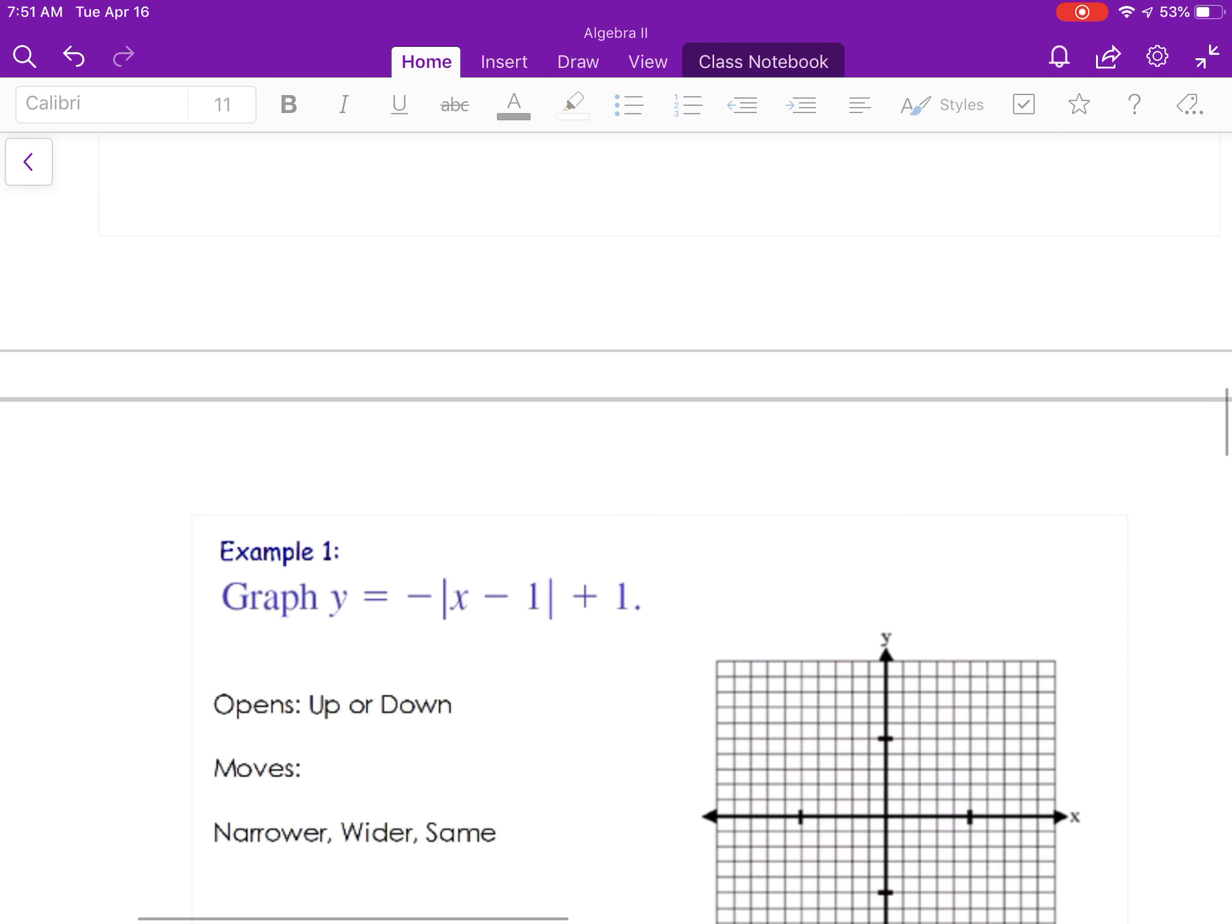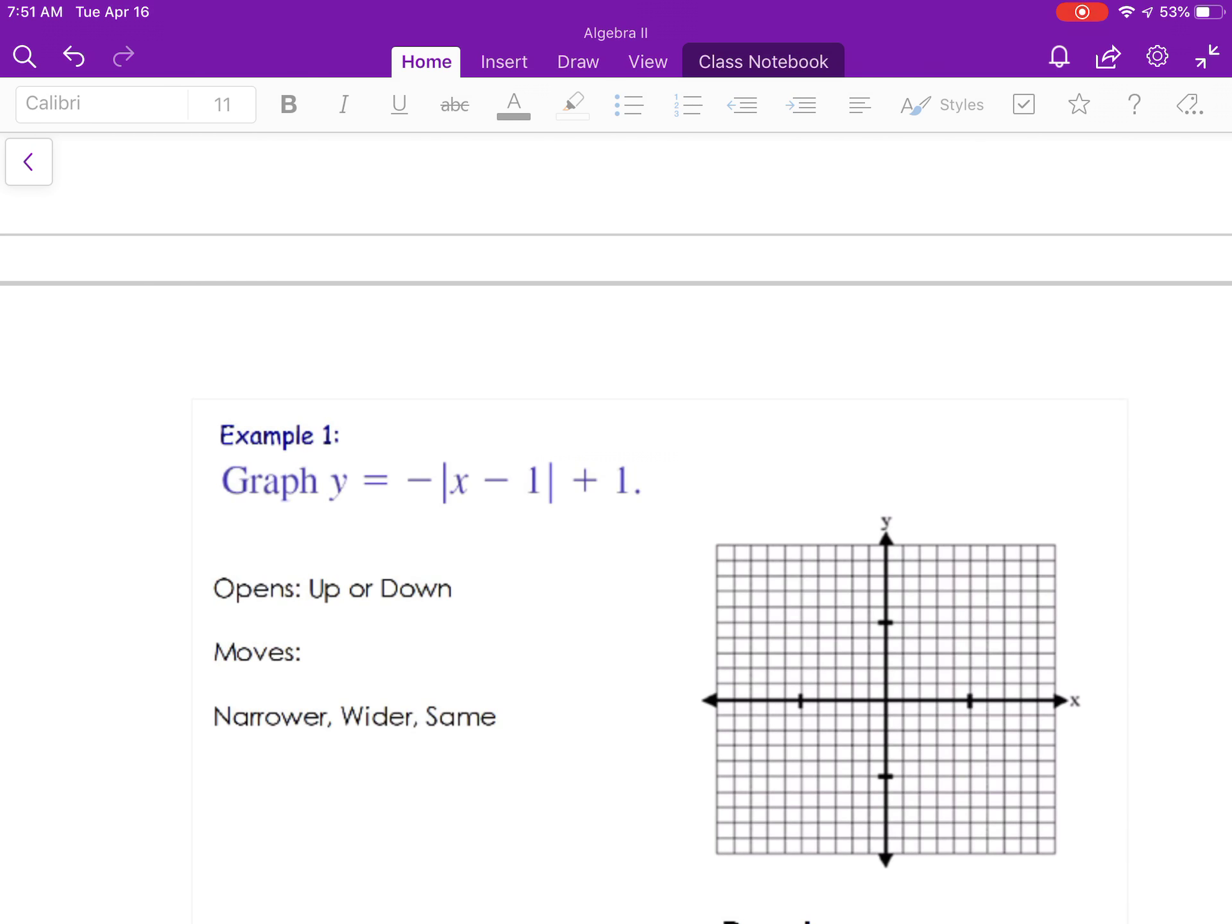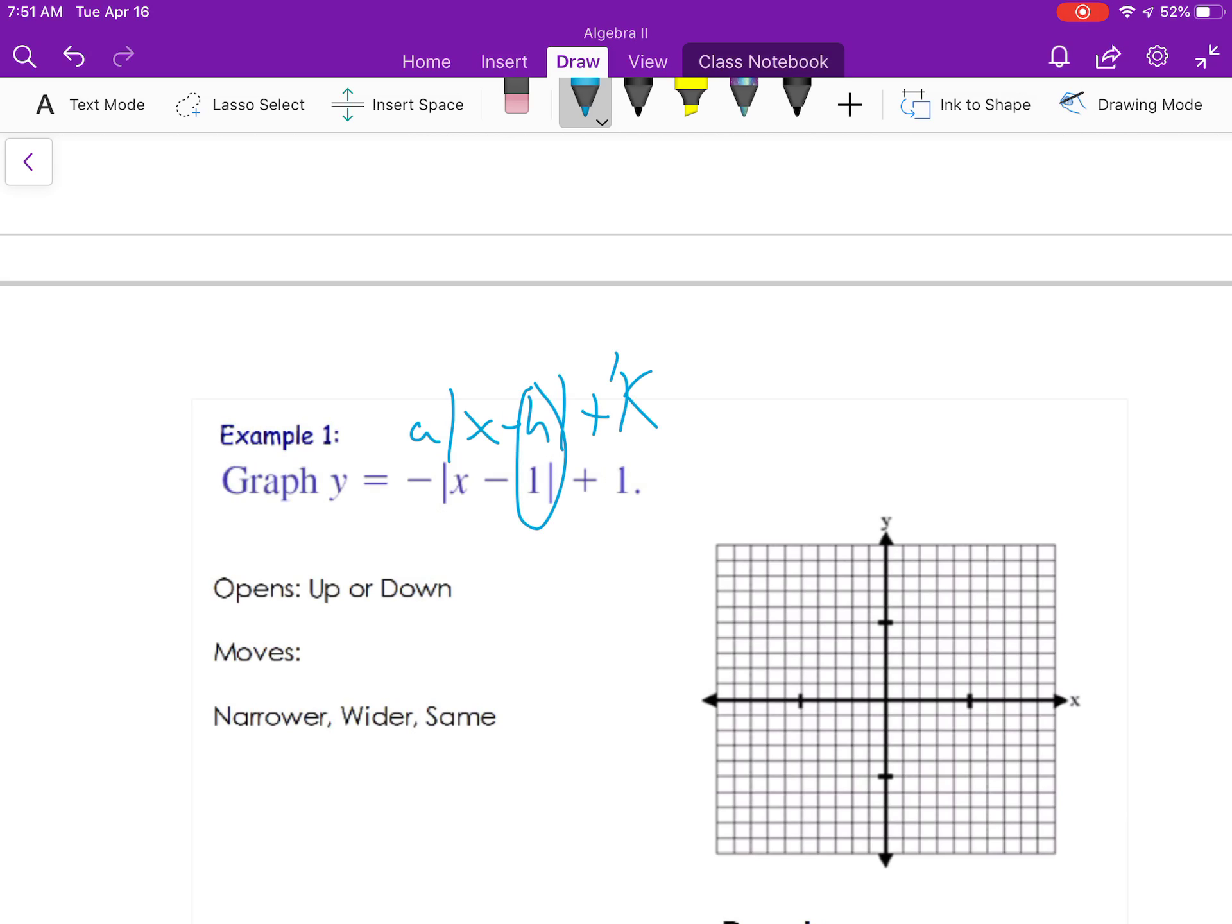Right above there I got a x minus h plus k so I'm just comparing here's h here's k so that's going to tell me that I have a vertex of 1, 1. Watch out for the opposite sign so it's minus and minus was in the formula so my vertex is now at 1, 1. So I basically moved the graph to the right 1 because of h and I moved it up 1 because of k.